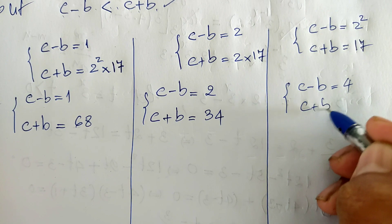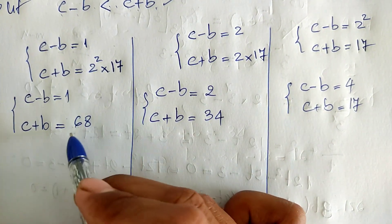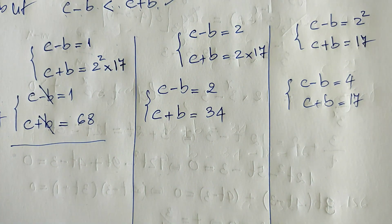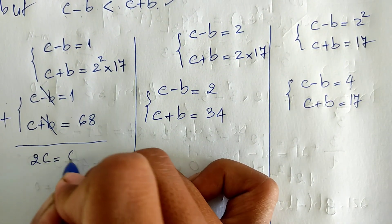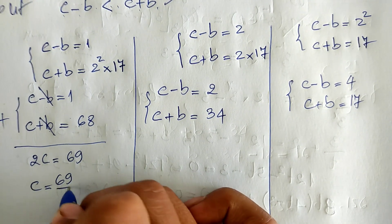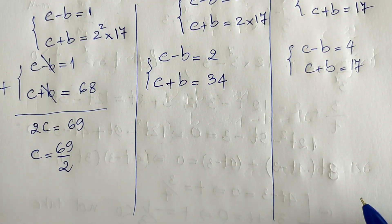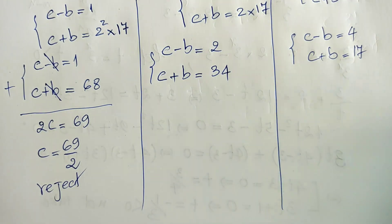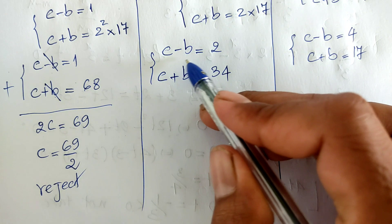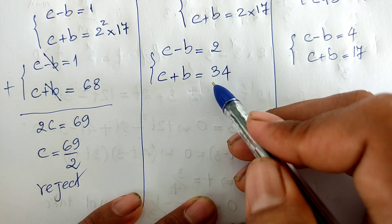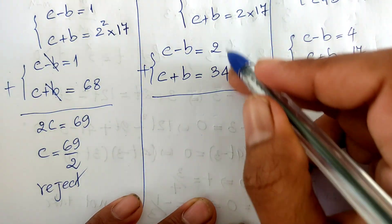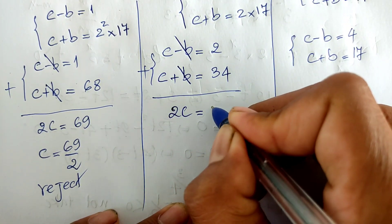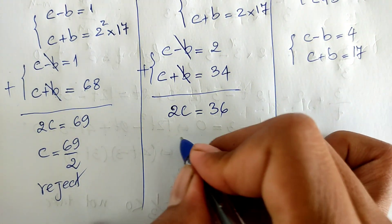For case one with c minus b equals 1 and c plus b equals 68: adding both equations gives 2c equals 69, so c equals 69 divided by 2. This is not an integer, so we reject it. For case two with c minus b equals 2 and c plus b equals 34: adding both sides gives 2c equals 36.